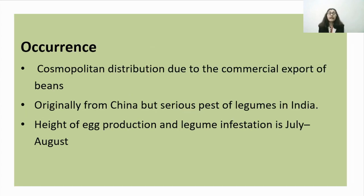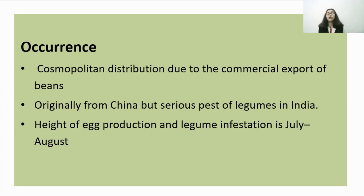Regarding occurrence, it is cosmopolitan in distribution due to the commercial export of beans. Originally it is from China, and is found in all tropical and subtropical countries. It is a serious pest of legumes in India. The height of egg production and legume infestation is July to August.